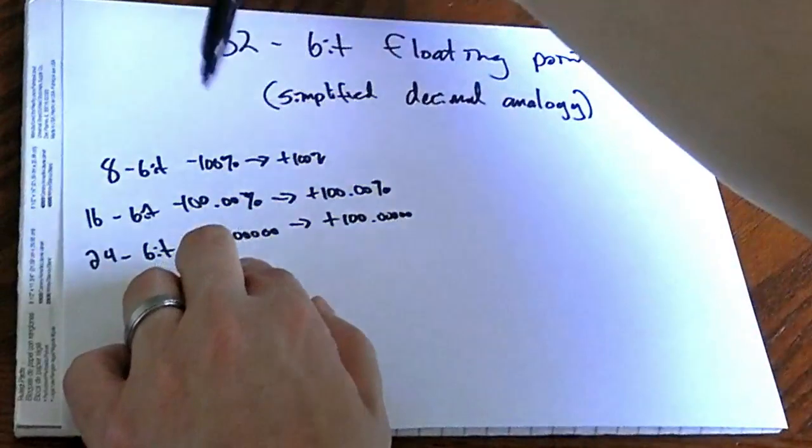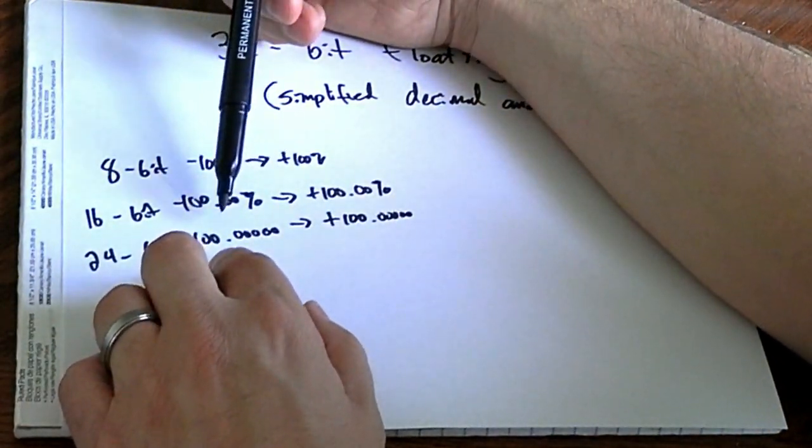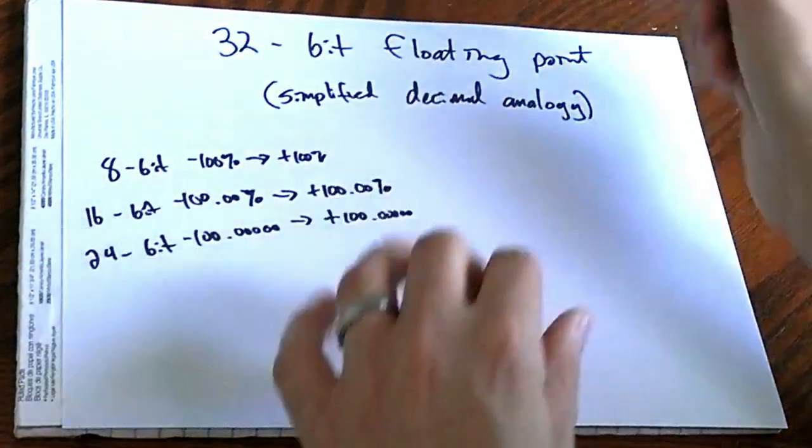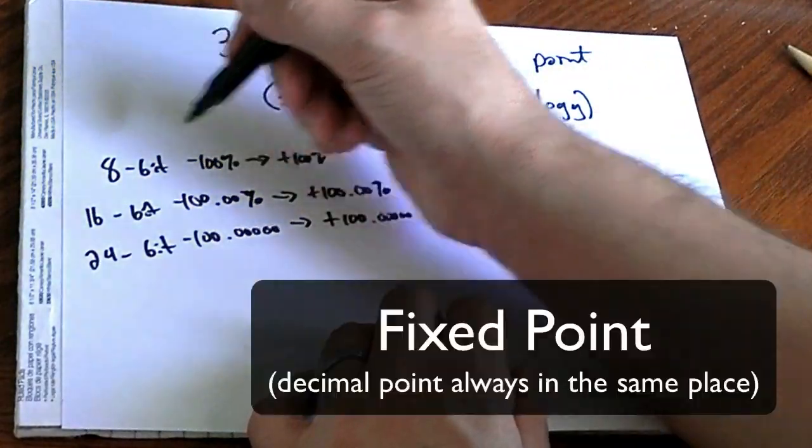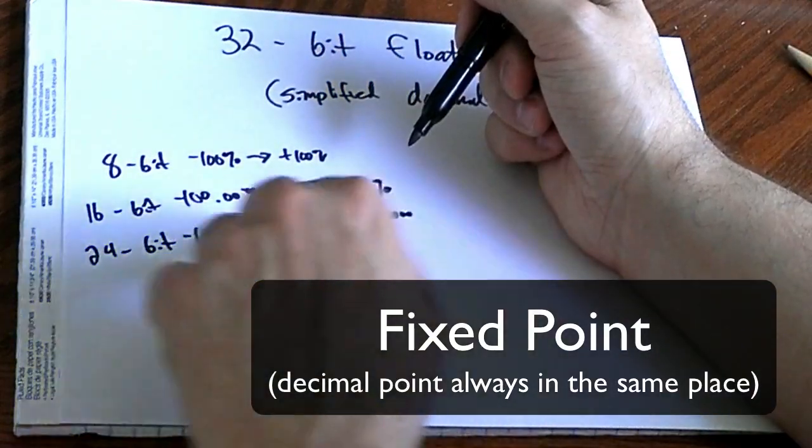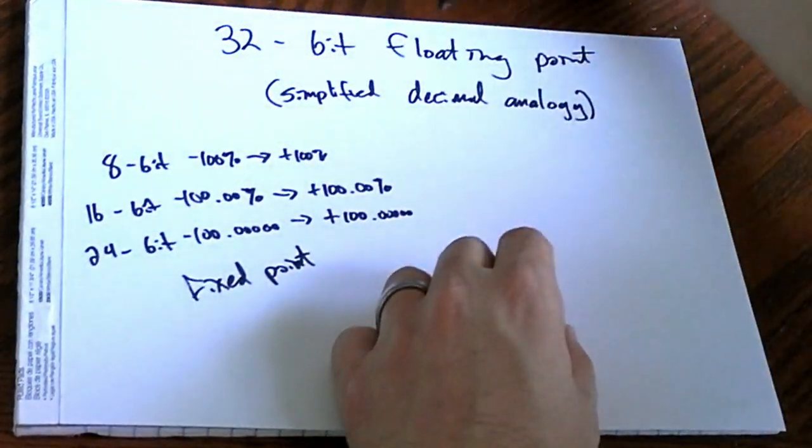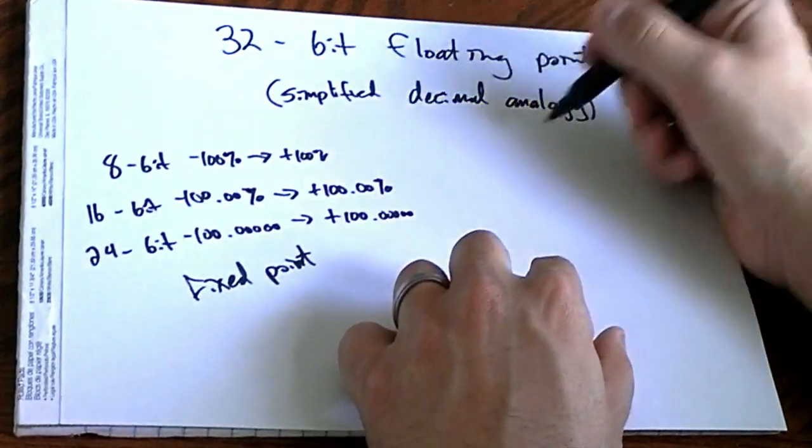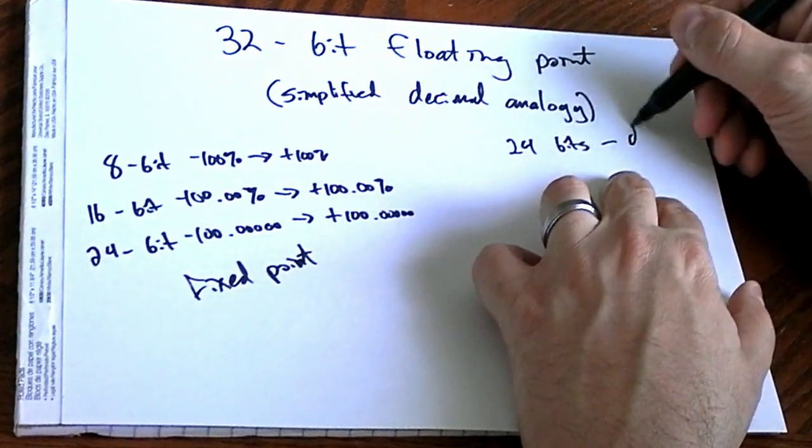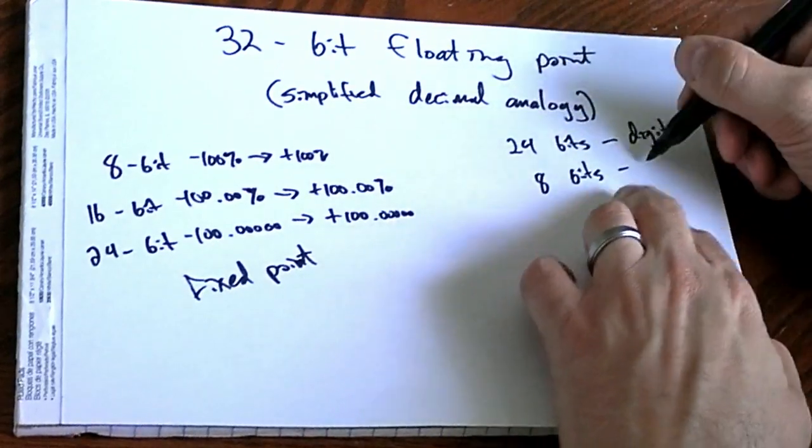Now, the trick with these is you have a set number of digits. So, you still can't go under negative 100 or above positive 100 because these are all fixed points. That means the decimal point is always in the same spot as far as your decimals. With 32-bit floating point, the way it's stored is 24 of the bits are used to store digits. 8 bits are used to store the exponent.